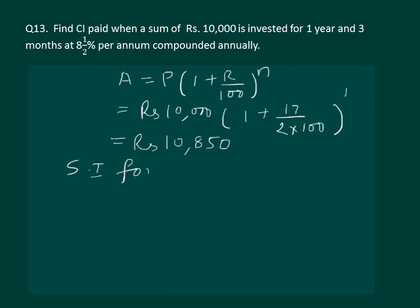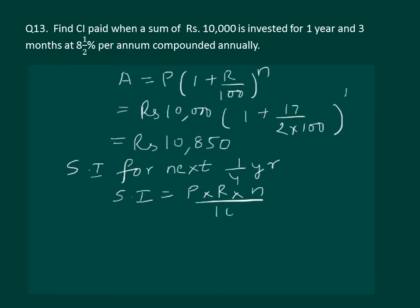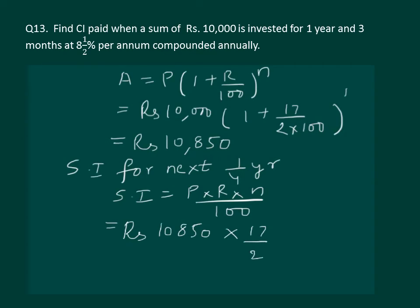Now let us calculate simple interest for the next one-fourth year. The formula for simple interest is P into R into N divided by 100. Here we take the amount of rupees 10,850 as the new principal, with rate of interest 17 by 2 and n equal to 1 by 4.